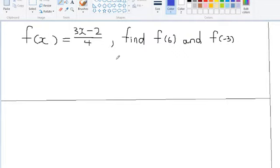Good day. We have a function f of x which is equal to 3 multiplied by x subtract 2 all over 4. We are asked to find f of 6 and f of negative 3.